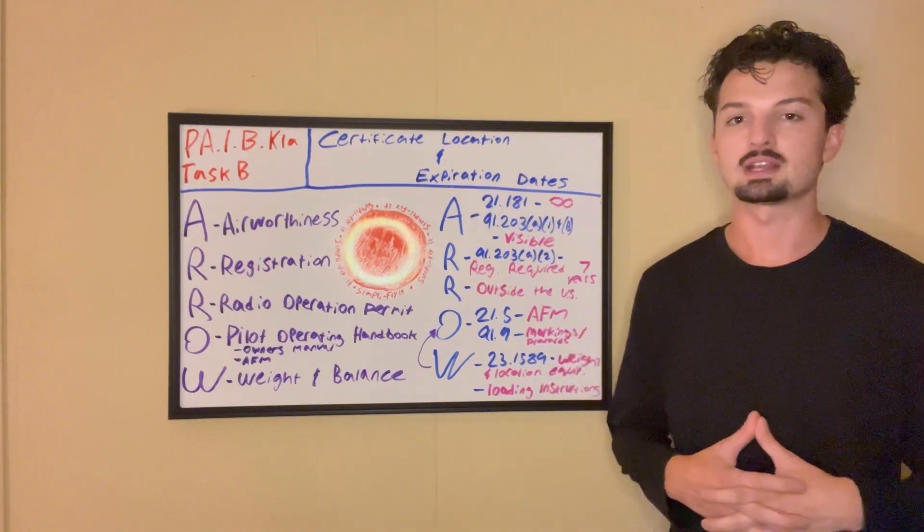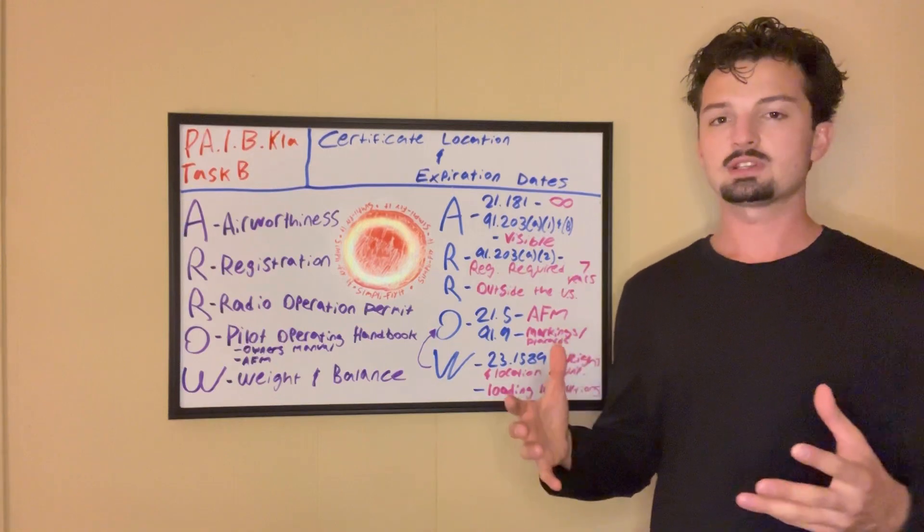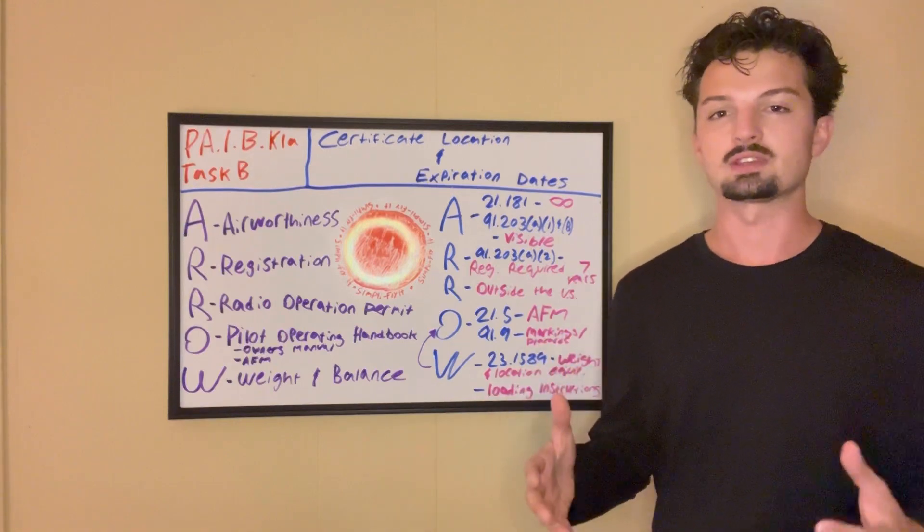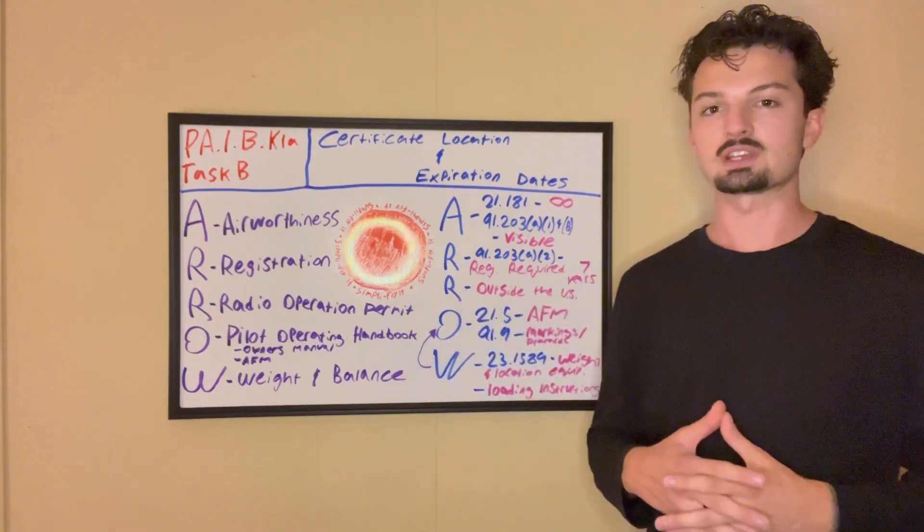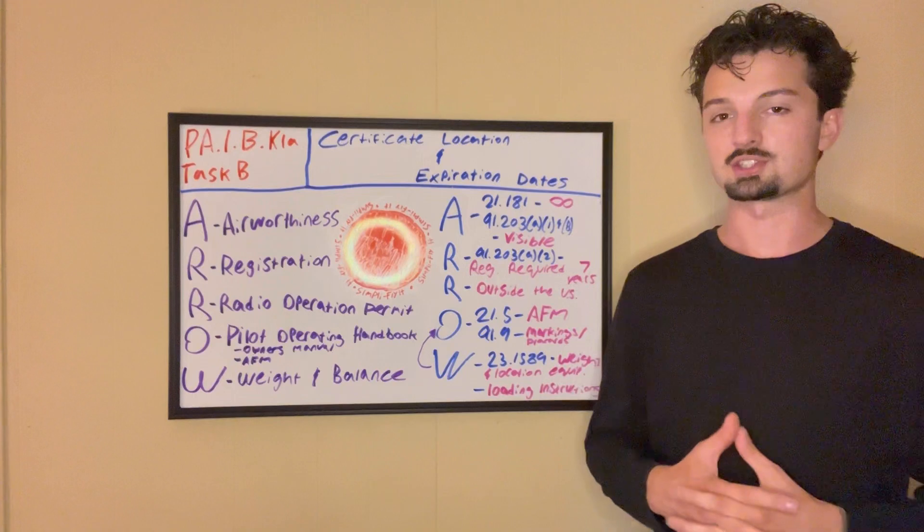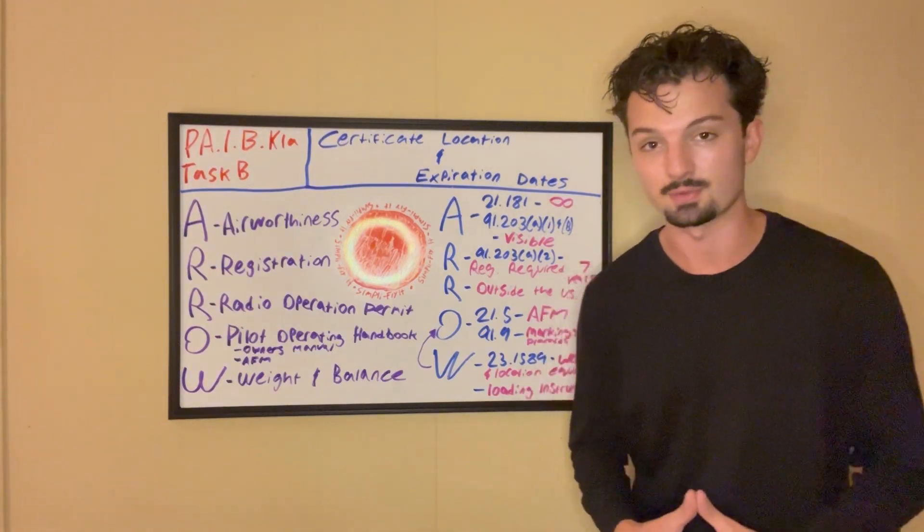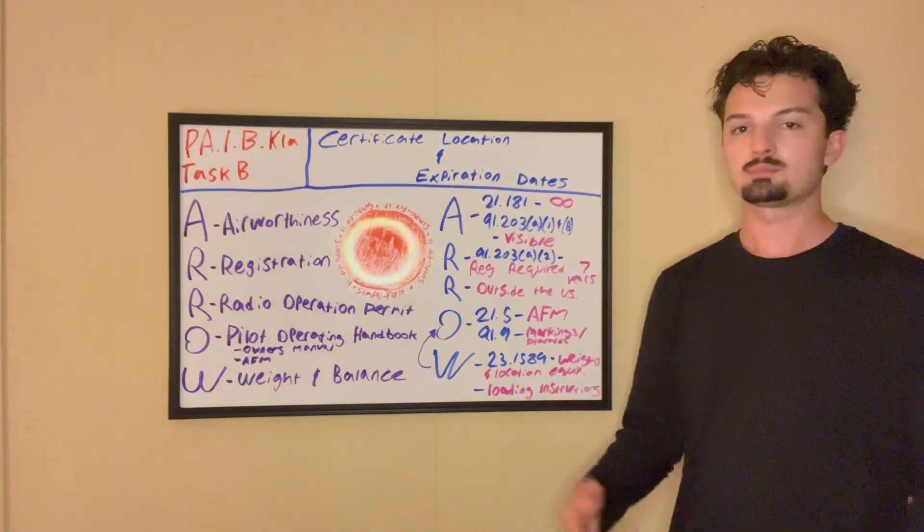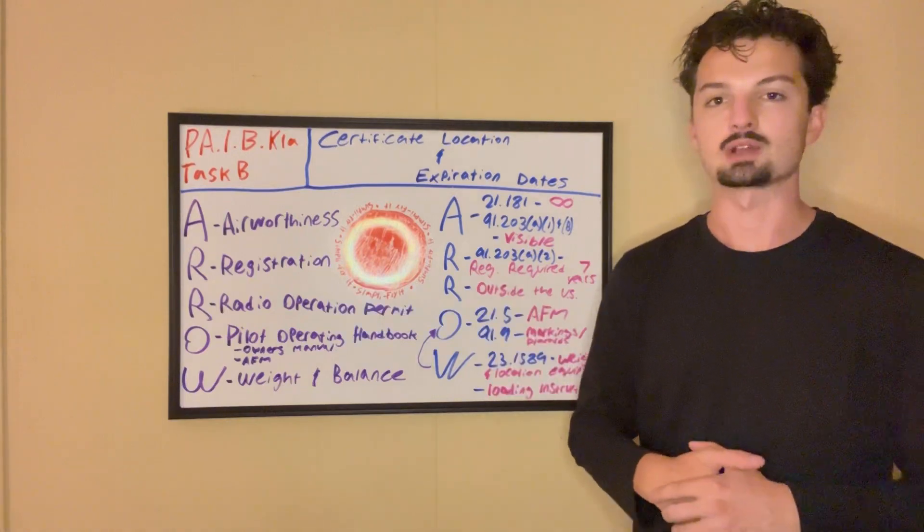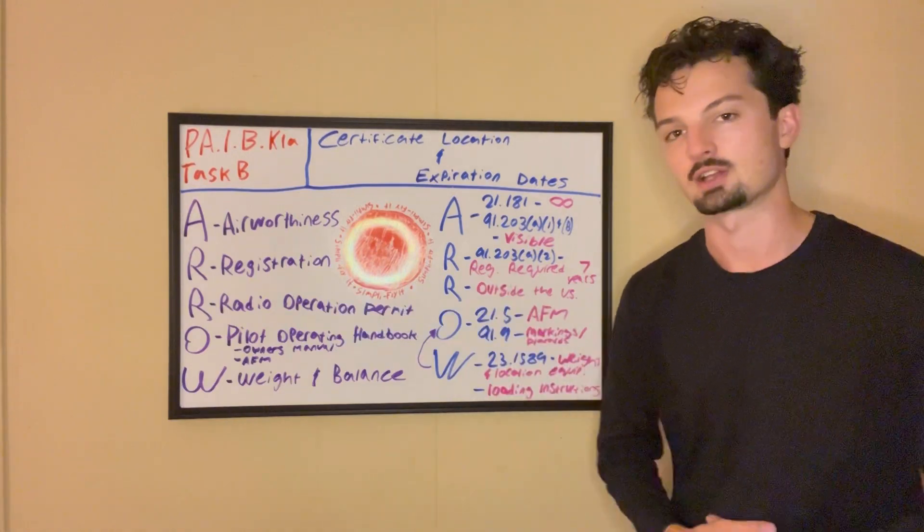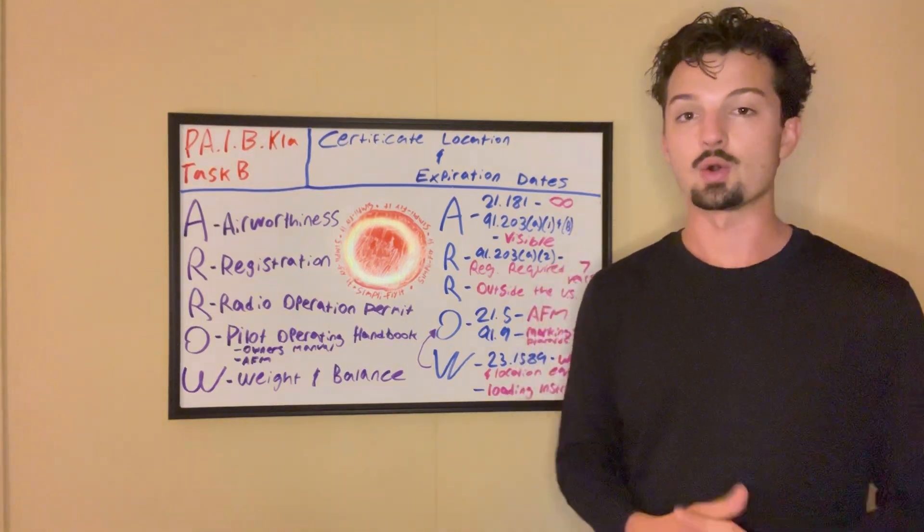The next letter in our acronym is another R, the Radio Station Operating License or Operating Permit. I've heard it called both. Now, this is only needed if you're flying outside of the U.S. So we're kind of just going to glaze past this because we're focusing on what you need to pass your private pilot check ride and that most likely does not involve flying out of the U.S. If it does, for the one out of a million of you, I'm sorry. Some people even leave this R out of their aero acronym because it only applies to those who are flying outside of the country, not to most student pilots. But I figured I'd throw it in so you at least know about it.